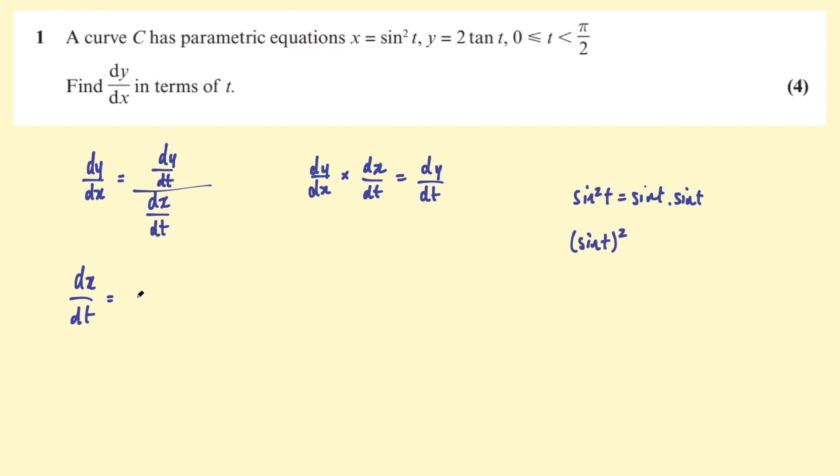The derivative of sine is cosine, cosine t, and then the derivative of the square. So the square of sine t. So when we have the exponent there, we use the power rule, we bring that down the front, so it's two, and then that function stays as is.